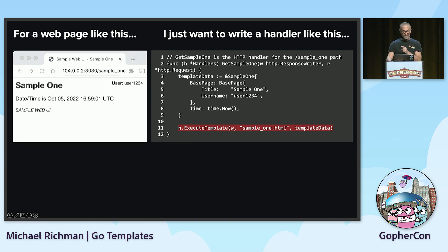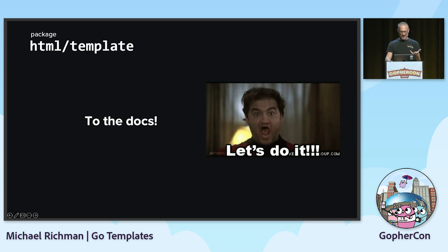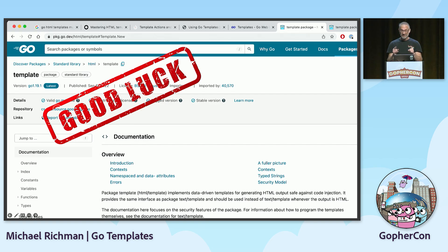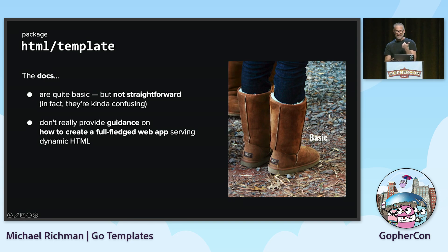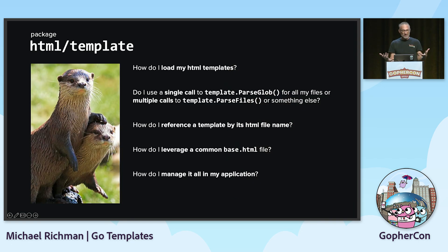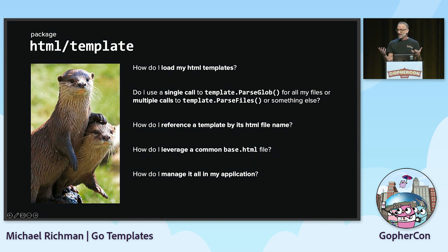So how do I make it work like that — like line 11, what I want to do? Let me check out the docs. Good luck, because if you've looked at these docs they are confusing and definitely not straightforward. They're basic, but not in a straightforward way — they don't really provide any guidance on how to create a full-fledged web app serving dynamic HTML. I'm left with a lot of questions: how am I supposed to load my templates — use a single call to ParseGlob, call ParseFiles multiple times, or something else? How do I reference a template by HTML file name? How do I leverage common elements like a base HTML file?